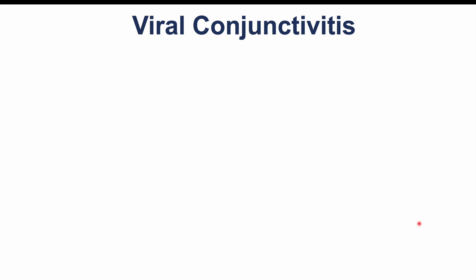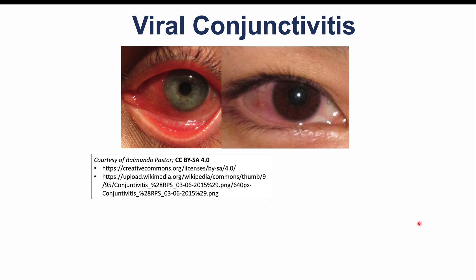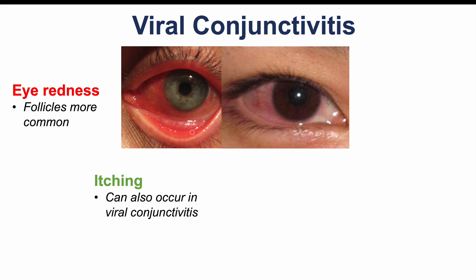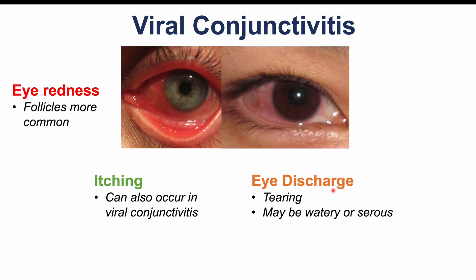Now let's talk about viral conjunctivitis. Again, we see eye redness. In viral conjunctivitis, we're going to see something called follicles more often — these little raised bumps. If you pull down on the eyelid, you can actually see these little raised bumps. Follicles can occur in viral conjunctivitis but also in allergic conjunctivitis. Itching can occur with viral conjunctivitis, but it's not as characteristic as in allergic conjunctivitis. Eye discharge is also present, and it is going to be more watery or serous.